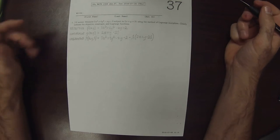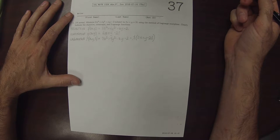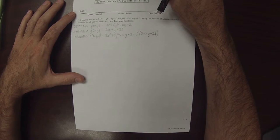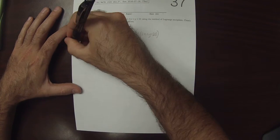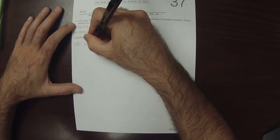So the method of Lagrange multipliers says that the minimum, if any, is going to be a stationary point of the Lagrange function. So let's find the stationary points of big F.